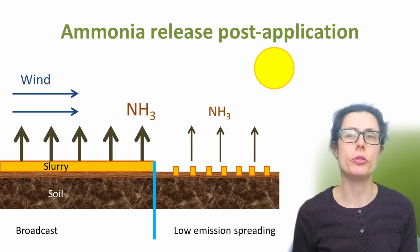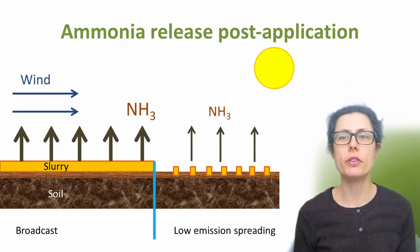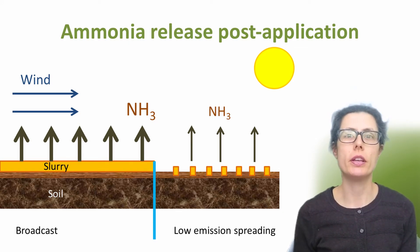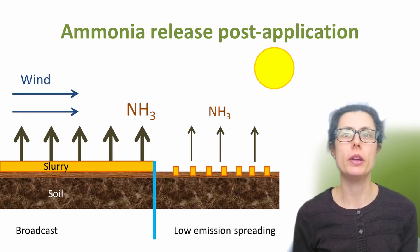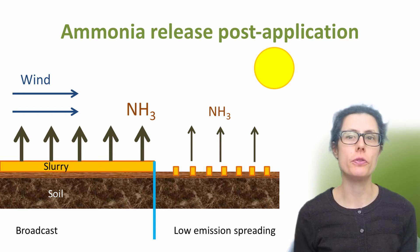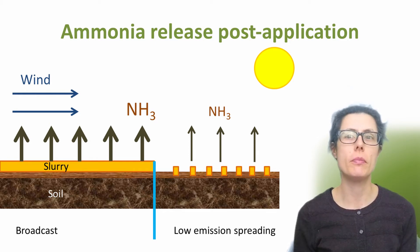This diagram shows two scenarios. On the left, the slurry or manure has been surface broadcast, which is the main technique for applying manures and slurries, and a lot of ammonia is being emitted. On the right hand side, the slurry has been applied with a low emission spreading technique, such as an injector or trailing shoe, with much lower ammonia emissions. A lot more ammonia will be released when the slurry remains on the surface, and also more ammonia will be released on warm and windy days.